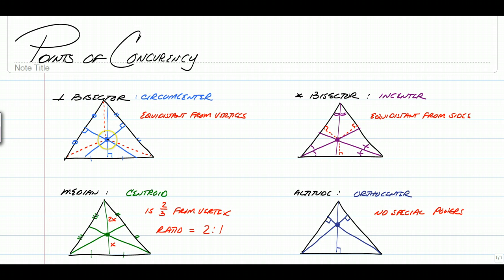All three of them would intersect at a point known as the circumcenter, and the circumcenter's special power is the fact that it is equidistant from all vertices in the triangle.